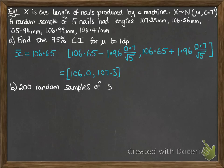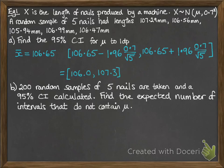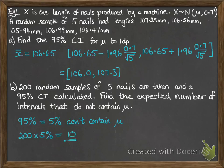Part b says 200 random samples of five nails are taken, and the 95% confidence interval is calculated. Find the expected number of intervals that do not contain μ. If you repeated that first part 200 times, taking a sample of five every time and working out a confidence interval, you do that 200 times over. How many would you expect to give an interval that does not contain μ? Think back to the definition. If it's 95%, it tells us that 95 out of 100 will contain the mean. So for 200, 5% won't contain the mean. 5% of 200 gives us 10. Ten of those confidence intervals will not contain the real population mean.